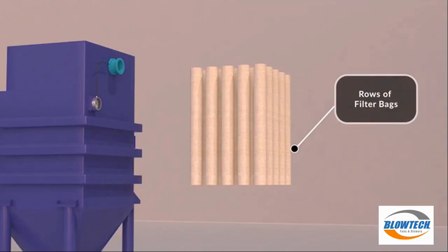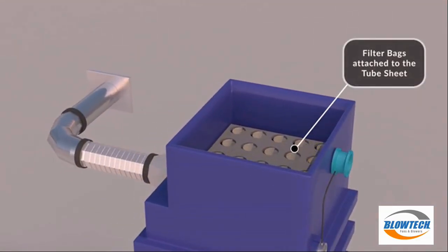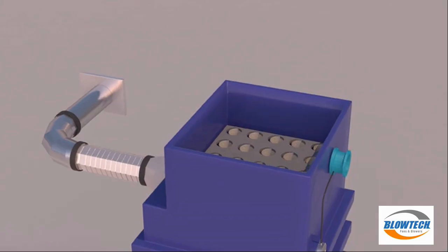This includes rows of filter bags. Each filter bag is attached to the tube sheet. Above the tube sheet in the upper body is the cleaning system of the machine.